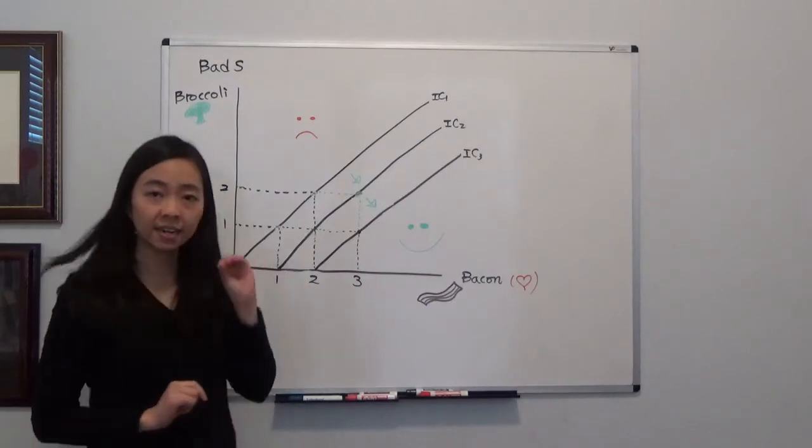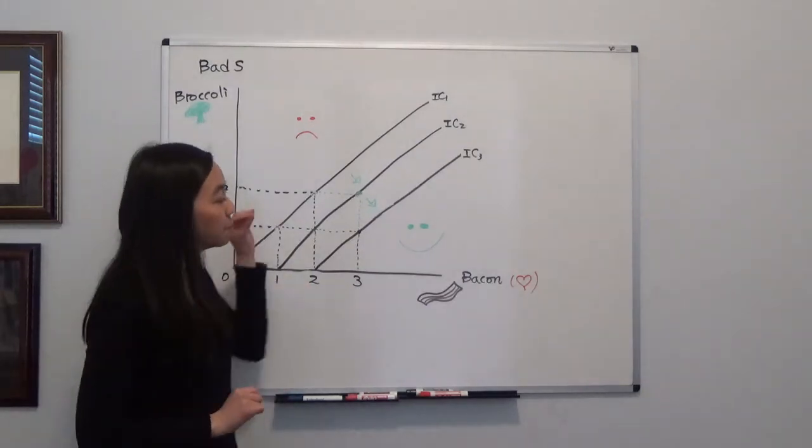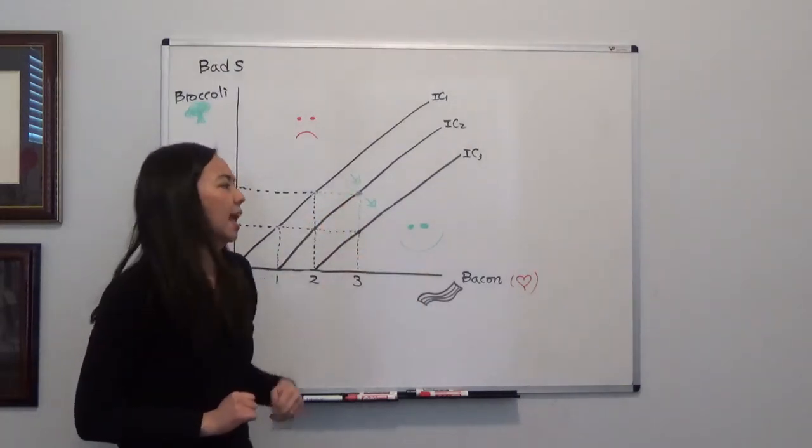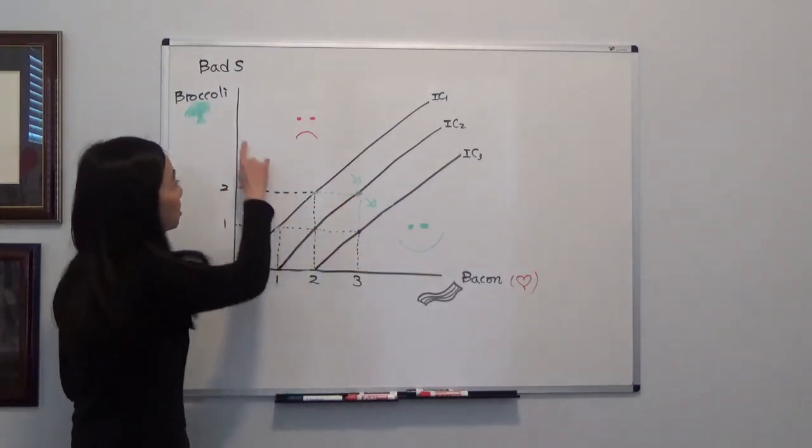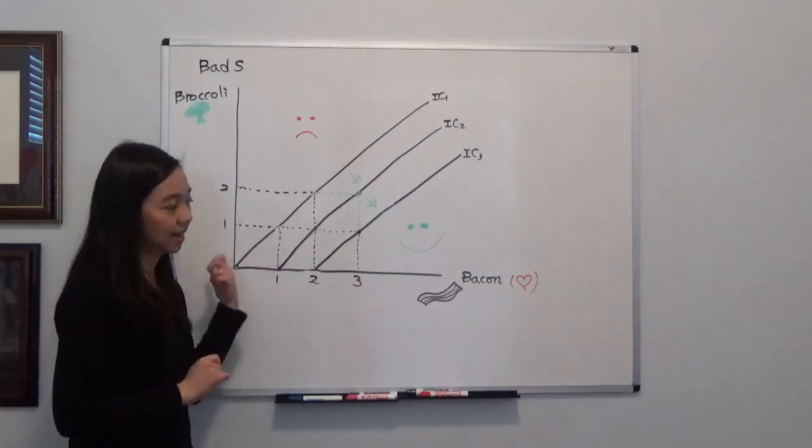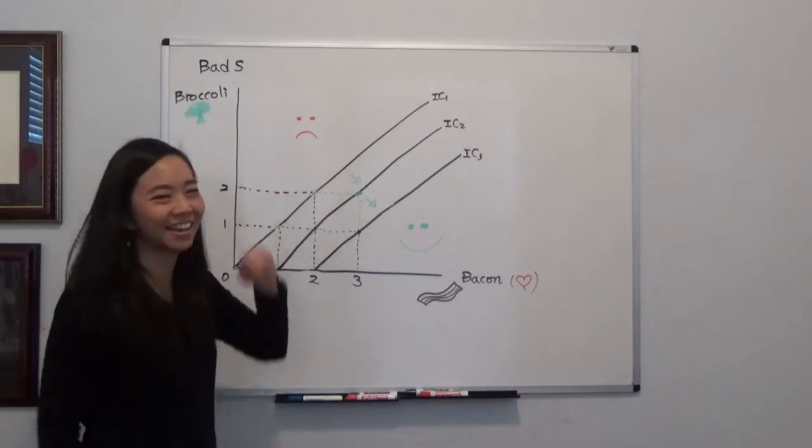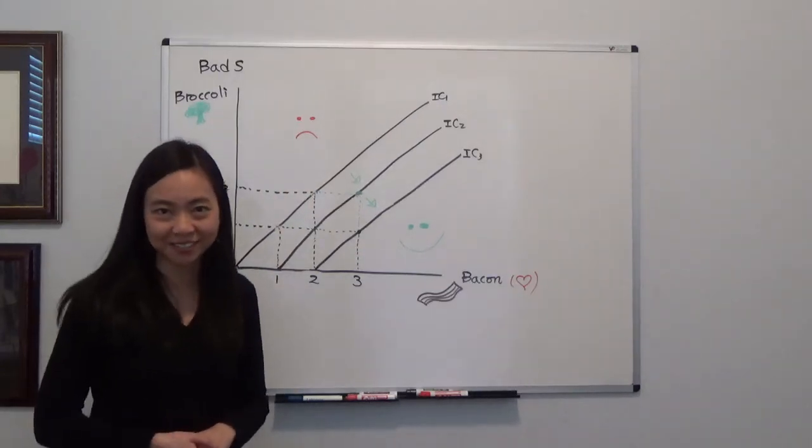You can see that any direction that gives Jason more bacon and less broccoli is going to make him really happy. The direction that gives him more broccoli and less bacon is going to make him unhappy. So that's the idea of bads. I hope this helps and I'll see you next time.